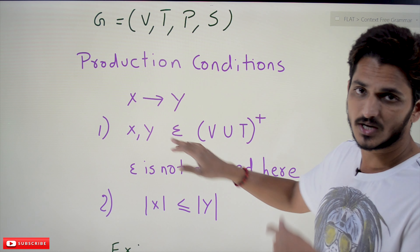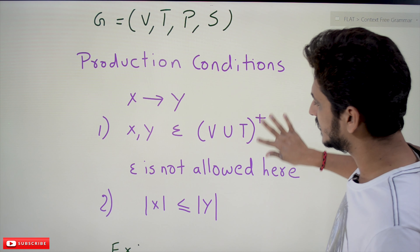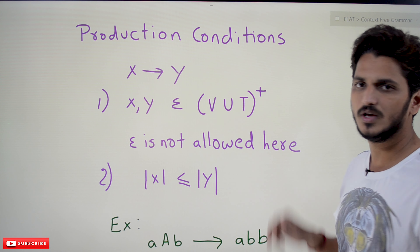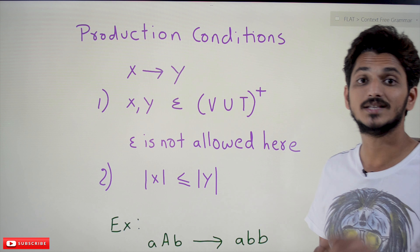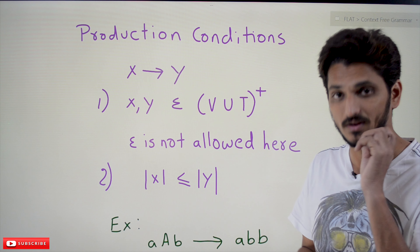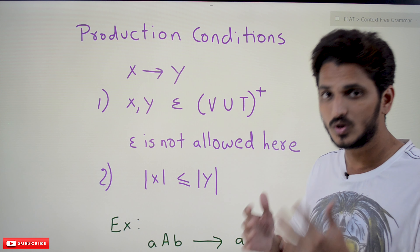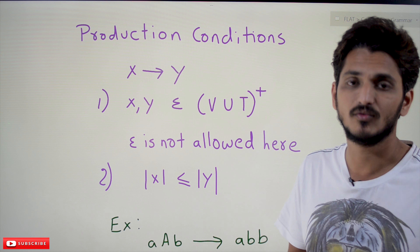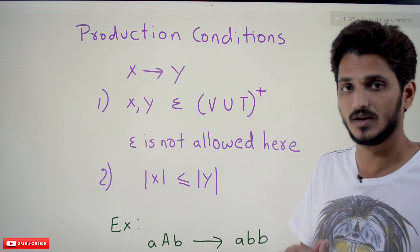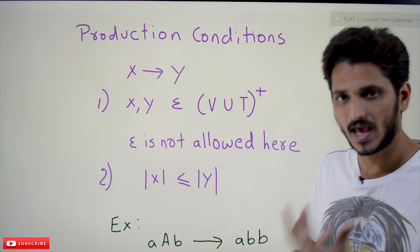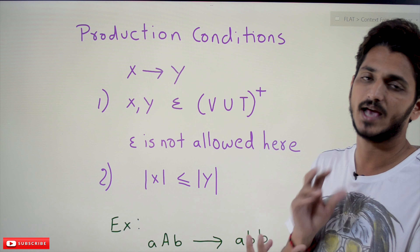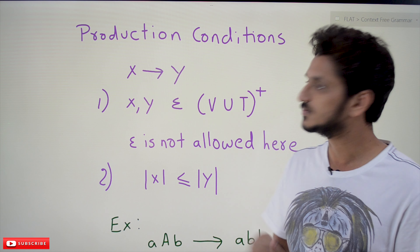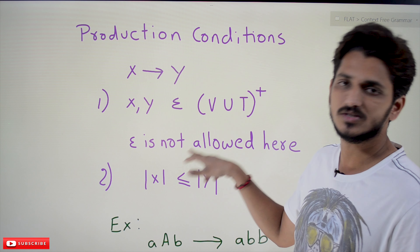From this first condition we can understand that epsilon is not allowed in context sensitive grammar — it won't accept epsilon in the language.